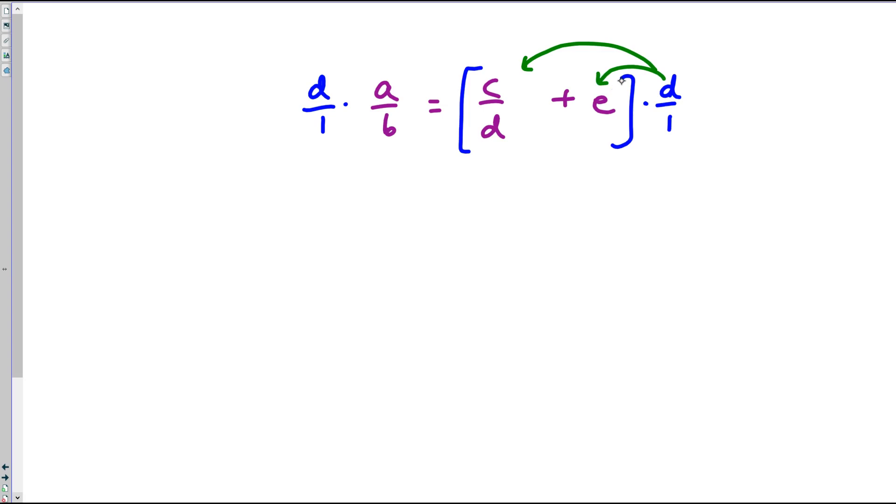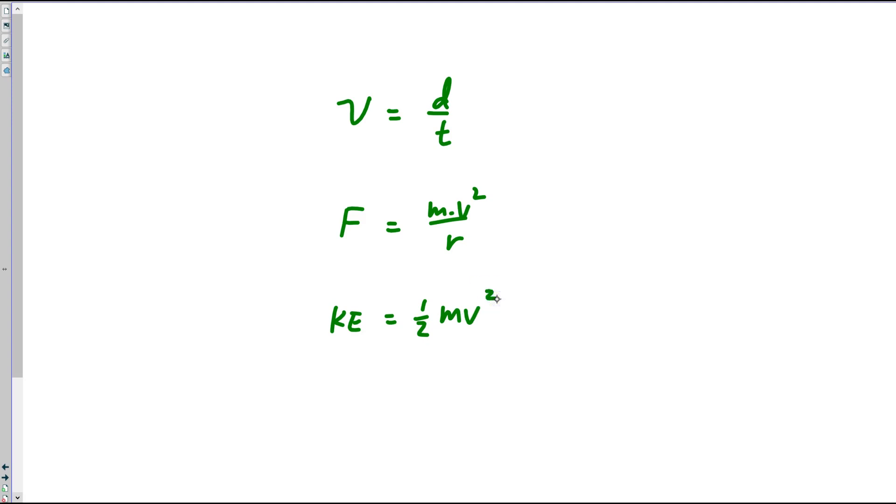And so now the d would get distributed to this first fraction, and it would get distributed to the e. So the trick doesn't work in all cases. But when we have an equation like speed is distance over time, or force is mass times speed squared over radius, or kinetic energy is one half mass speed squared, or any other host of equations,